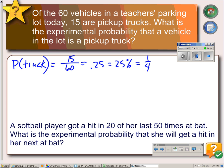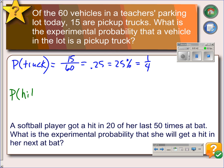Another example: a softball player got a hit in 20 of her last 50 times at bat. What is the experimental probability that she will get a hit in her next at bat? So we're looking for the probability of a hit.